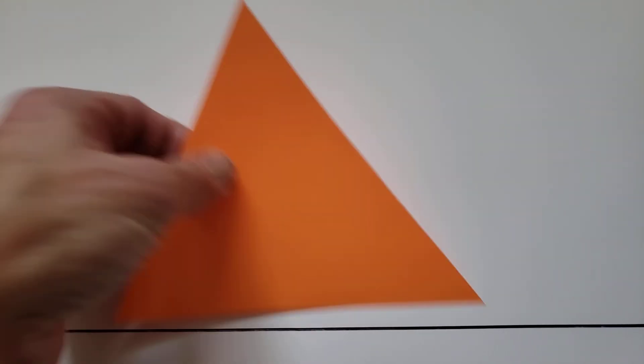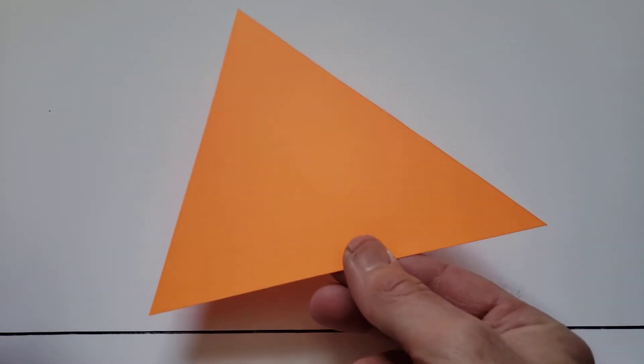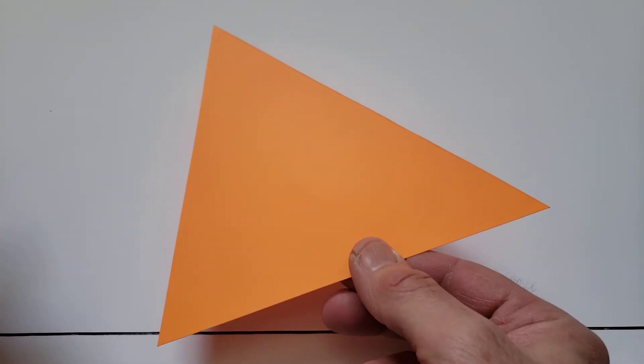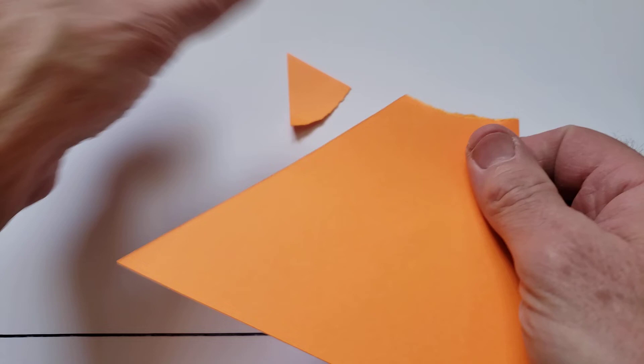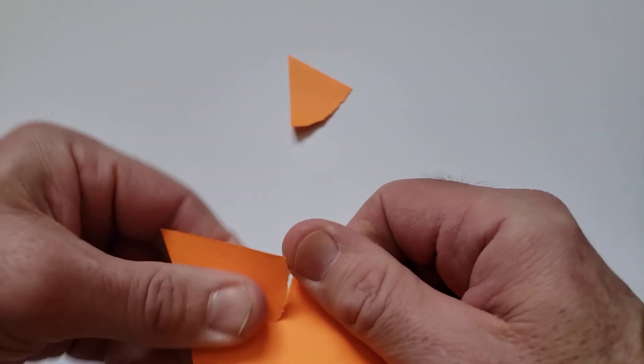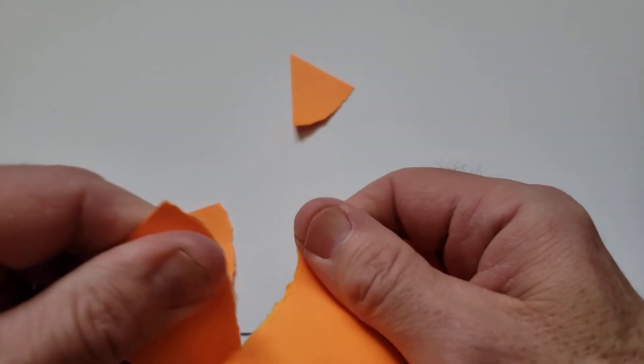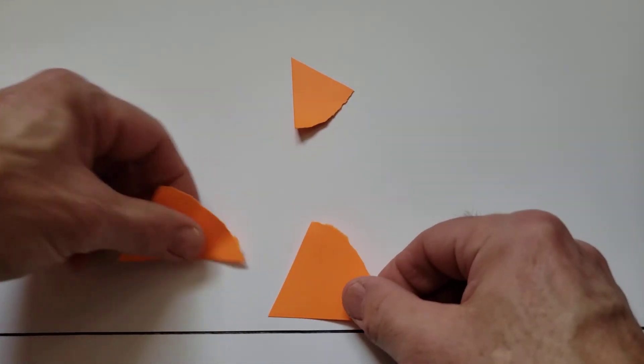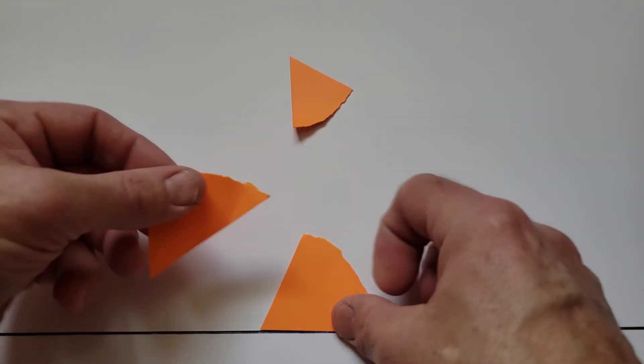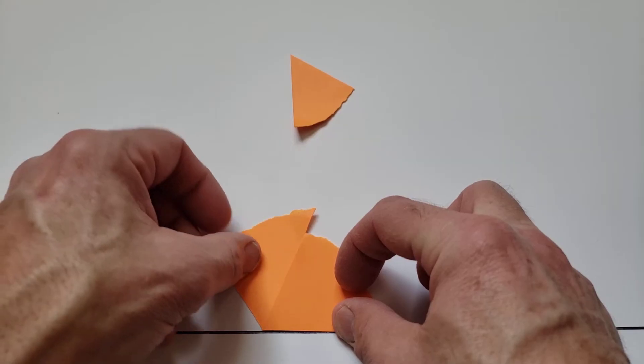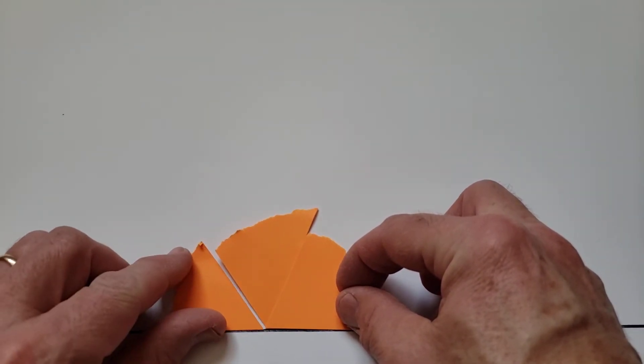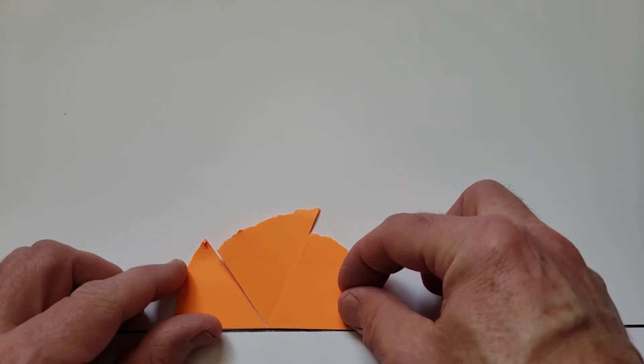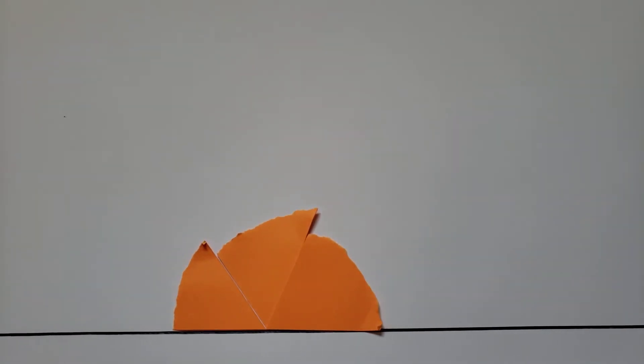Here's another triangle. This is an example of an acute triangle. All three angles are less than 90 degrees. So again, if I rip off the corners... together, the three of them make a straight angle. A straight angle is a 180 degree angle.